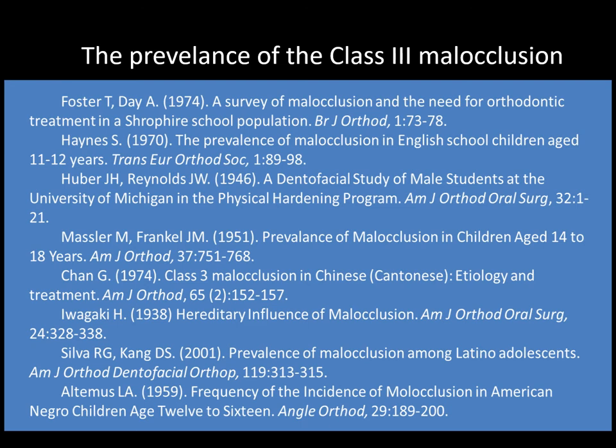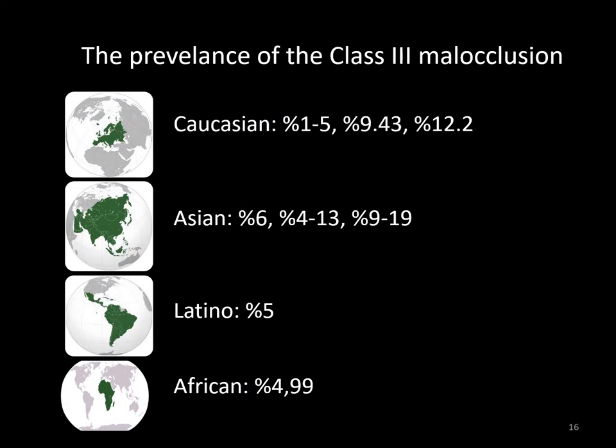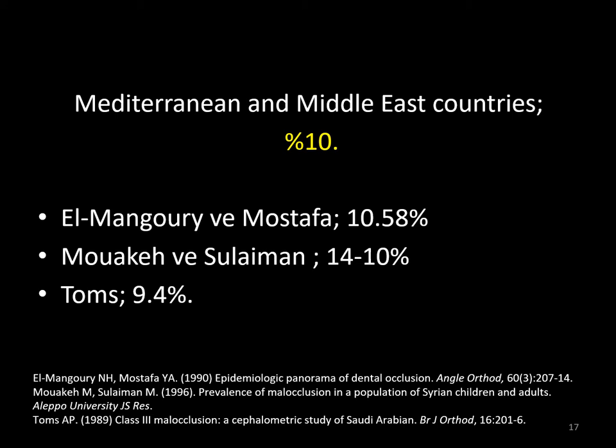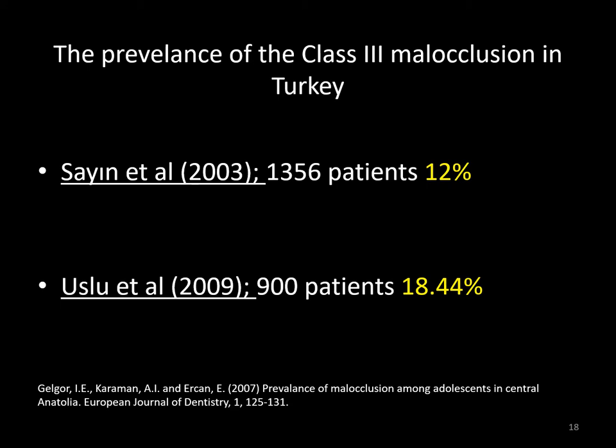There are a number of studies about the prevalence of Class 3 occlusion. The statistics reveal certain differences among various ethnic groups. In Asia, for instance, the prevalence is higher compared to the rest of the world. In the Mediterranean region and the Middle Eastern countries, the percentage is about 10%. In Turkey, its prevalence is a bit higher, around 12%, most probably due to our Asian ancestors.